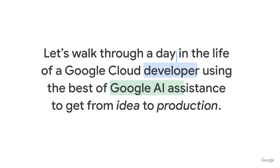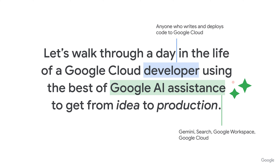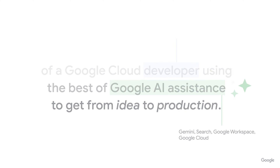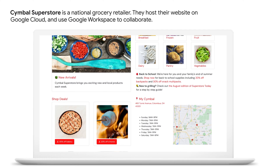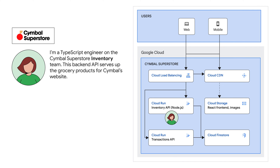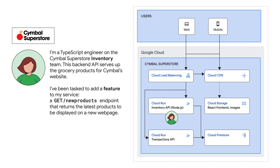This video depicts how a developer can enable and use Gemini in the software development lifecycle. The scenario is Symbol Superstore, a grocery store web app running completely on Google Cloud. I'm a backend developer working in TypeScript on an inventory API, which serves up the products stored in a database. My job is to implement a new feature, Get New Products, which will serve up new products on a new arrivals page in the web app.